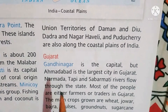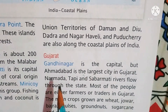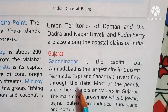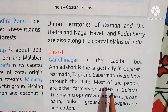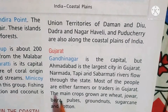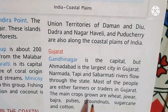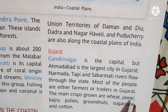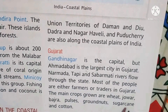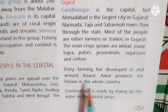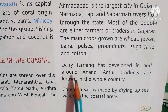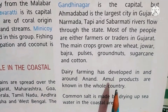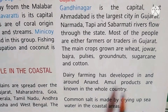Gujarat is the state along the western coast. Most people are farmers and traders. The main crops grown are wheat, jowar, bajra, pulses, groundnut, sugarcane, and cotton. Dairy farming is well developed in Anand. Amul, based in Anand, is famous throughout the country.